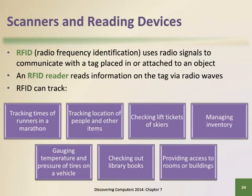RFID technology uses radio signals to communicate with a tag placed in or attached to an object, an animal, or a person. An RFID reader reads information on the tag via radio waves. Uses of RFID include tracking times of runners in a marathon, tracking airline baggage or inventory, checking lift tickets of skiers, checking out library books, and tracking payment as vehicles pass through booths on tollway systems.